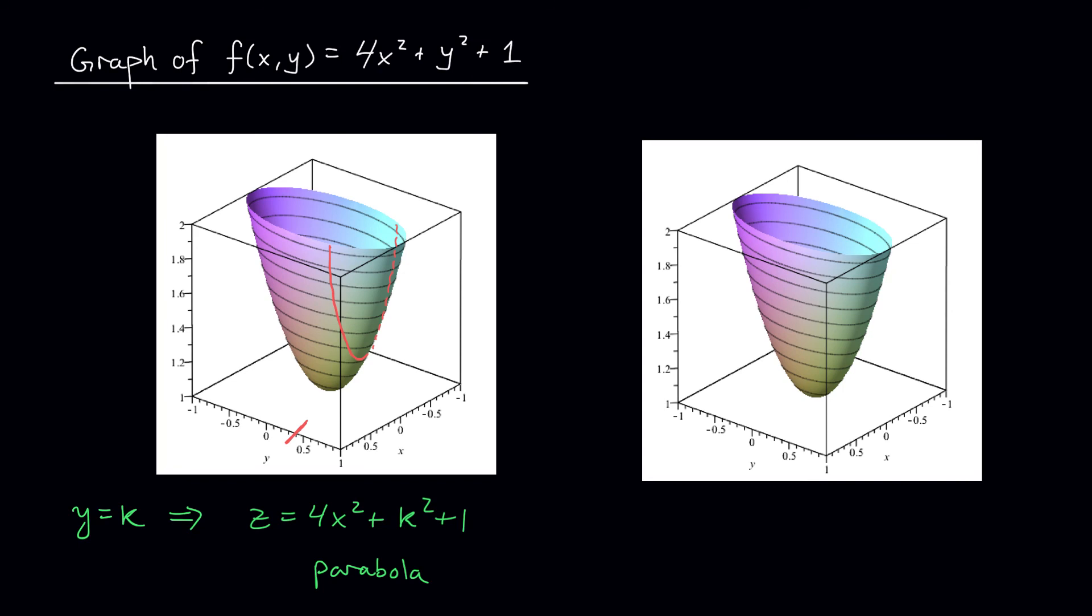Okay, let's check out the other tracings. What we get by setting x = k. My curve is then given by z = y² + 4k² + 1. The 4k² + 1 term is just a constant. So once again, we have a parabola, a parabola in the yz plane. Sure enough, if I make a cut along the x-axis and I trace out the resulting curve, what do you know? It's a parabola.